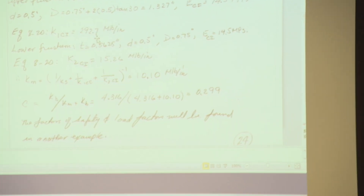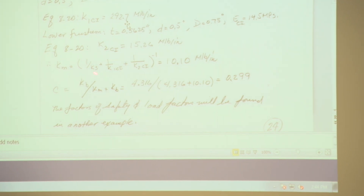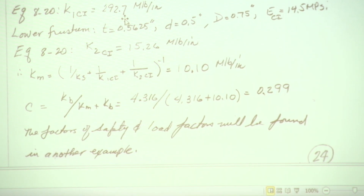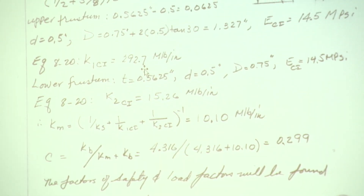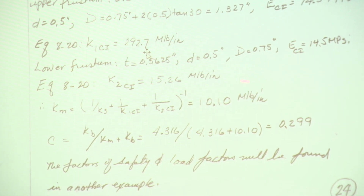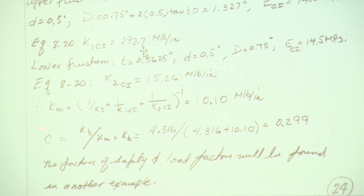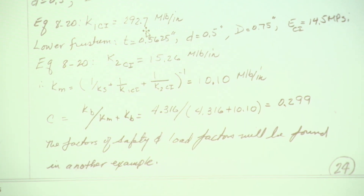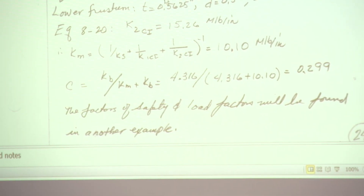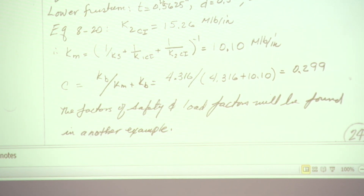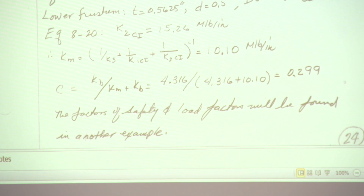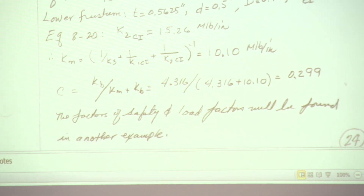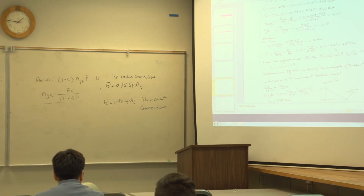Combine: KM equals 1 over (1/KS + 1/KCI1 + 1/KCI2), all to the minus 1. The joint constant C equals KB divided by (KM + KB), which comes out to about 30%. Load factors and factors of safety will be calculated in the next part of this example.